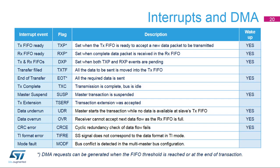Here is an overview of the SPI interrupt events. There are FIFO and error detection events to handle data flows. DMA requests are triggered internally by FIFO threshold events. The EOT event raises automatic control of the last incomplete packet when the overall number of data sent is not aligned with the data packet size.